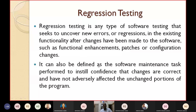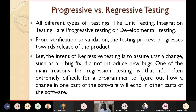Regression testing can also be defined as the software maintenance task performed to instill the confidence that changes are correct and they have not adversely affected the unchanged portions of the program. Normally whenever you are performing any maintenance activity, you have to carry out regression testing. If there is something called regression testing, there must also be something called progressive testing — let's briefly see what progressive testing means.